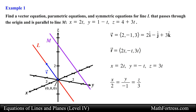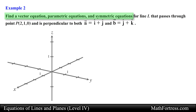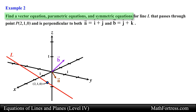Let's take a look at the next example. Find a vector equation, parametric equations, and symmetric equations for line L that passes through point P and is perpendicular to both vector A and vector B. We need to find vector, parametric, and symmetric equations of a line that passes through point P and is perpendicular to both vector A and vector B.